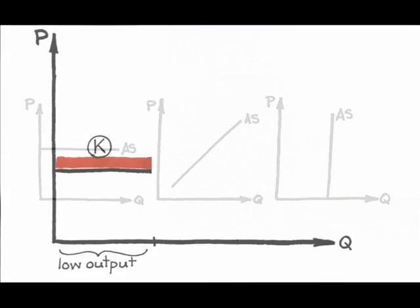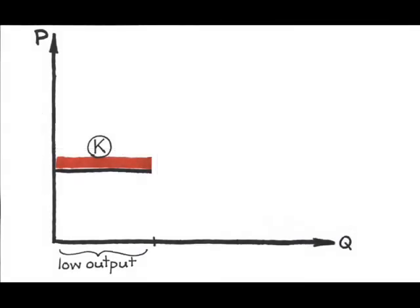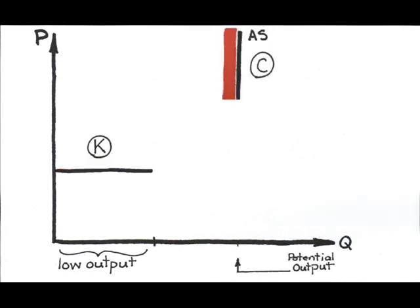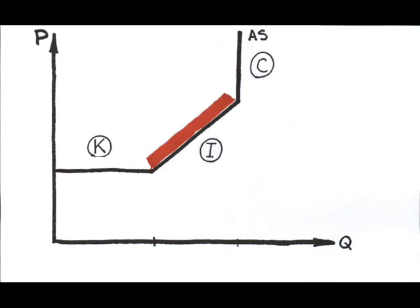At very low levels of GDP, where there are a lot of unused resources, we see the Keynesian model. At full employment, where we're operating at full potential, we see the classical portion. And in the middle, where responding to increased aggregate demand means an increase in GDP and an increase in prices, we're in the intermediate range.